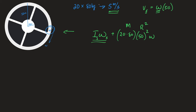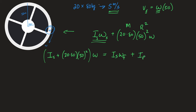They're suddenly going to start moving. So we write: space station plus 20 times 80 times 50 squared times omega equals — on the right side — the angular momentum of the space station at its new final angular speed, plus the moment of inertia of the people times their angular speed. I'll use subscript f for the people and f for the space station.